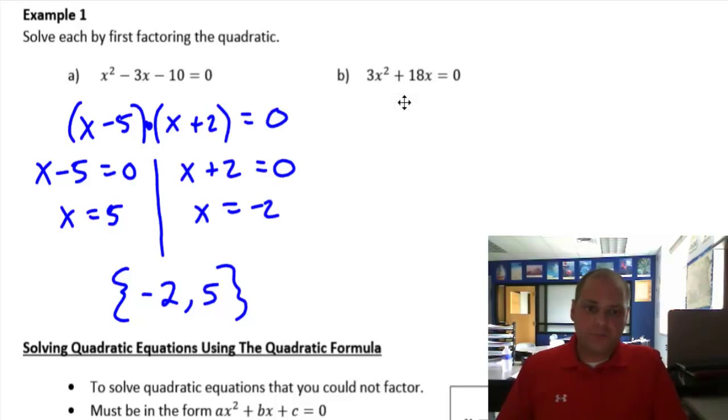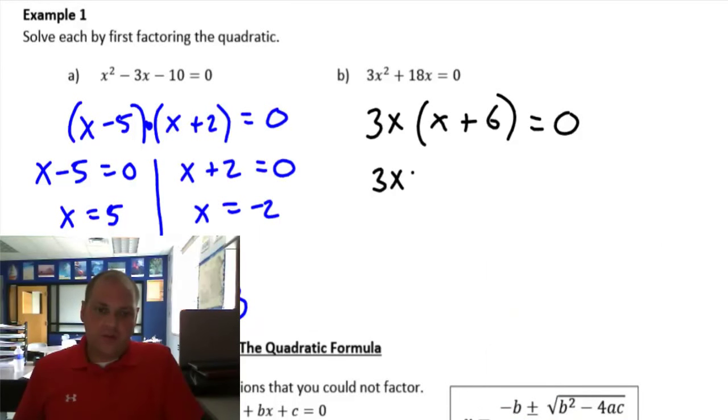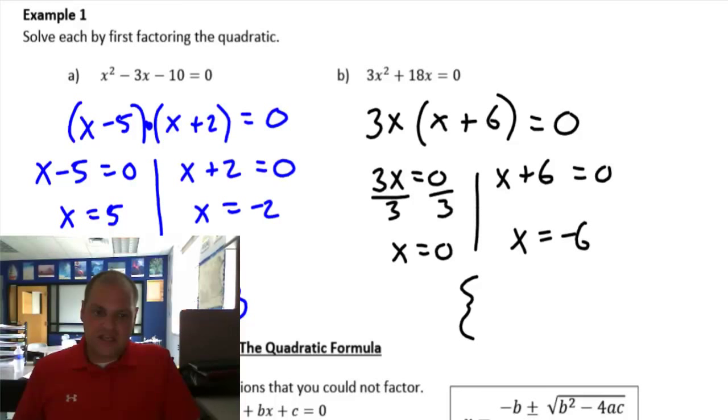Here's another example. This time it's a common factor. I'm going to pull out a 3x, and it's going to be x plus 6. Just because it doesn't look the same, you still have factors. One of the factors is 3x, and the other factor is x plus 6. So you do it the same way. You say 3x equals 0, or x plus 6 equals 0. Divide by 3. 0 divided by 3, a lot of people say it's 3. No. 0 divided by anything is 0. So x equals 0. Subtract 6, x equals negative 6. So my solution set here would be negative 6 and 0.